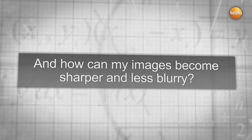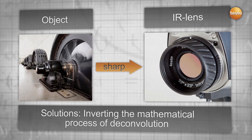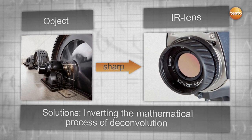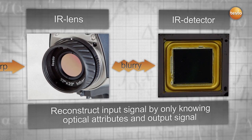Another challenge is to get clear and sharp pictures out of your measurements. With the help of deconvolution, we are able to reconstruct the input signal by recalculating the output signal with the optical attributes of the lens. Your images are therefore less blurry and sharper.